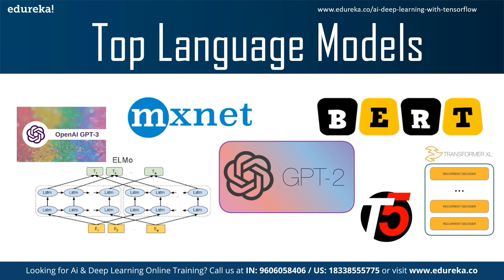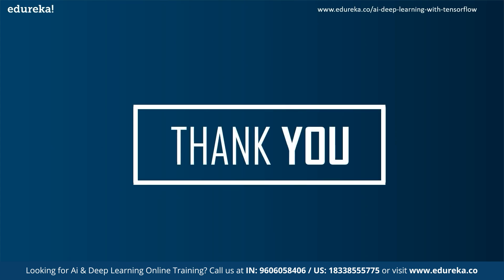Next we have ELMo — Embeddings from Language Models — a deep contextualized word representation that models both syntax and semantics of words as well as their linguistic context. Developed by AllenNLP, it has been pre-trained on a huge text corpus and learns functions from bidirectional language models. ELMo can easily be added to existing models and drastically improves performance across vast NLP problems, including question answering, textual inference, and sentiment analysis. With this, we come to the end of the session — I hope you enjoyed it and learned something new!